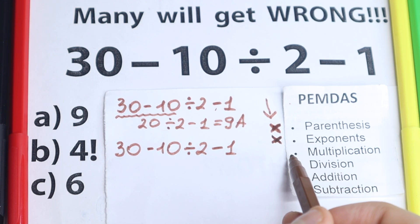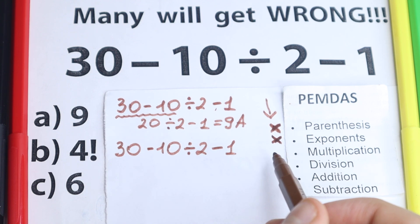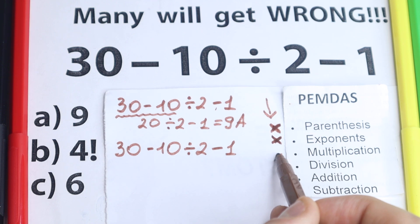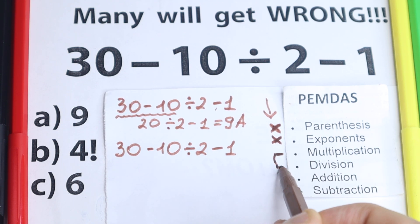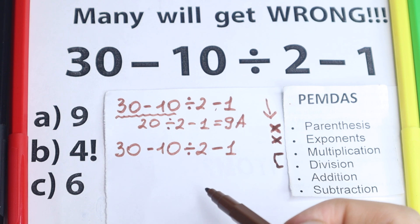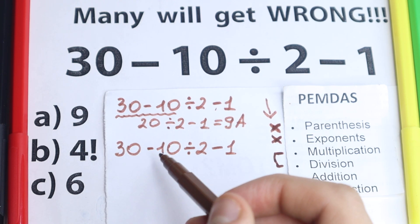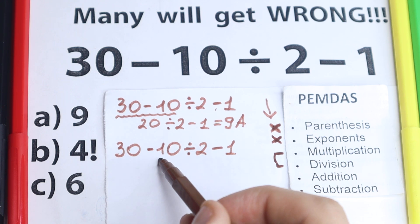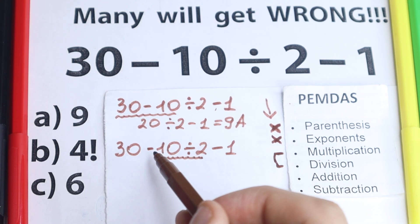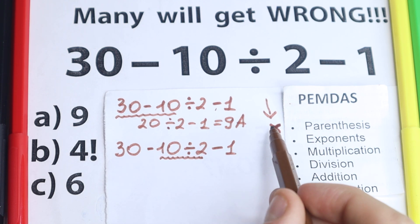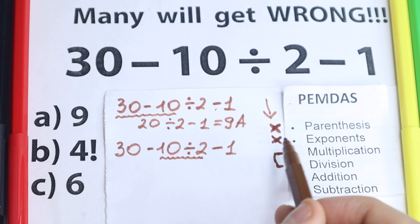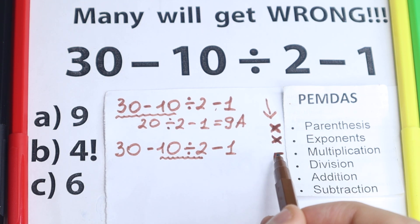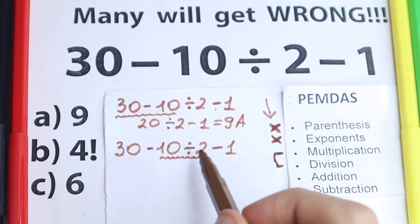The next step is multiplication — and a lot of students make this common mistake: they only find multiplication signs, but in our case we need to find also a division sign, because multiplication and division are one common group. Let's look: right here is subtraction, not our case. Right here we have division — this is great — and moreover we don't have multiplication. We have only subtraction and division, but the third step after skipping the earlier ones is the multiplication and division part. So we need to start from this division.